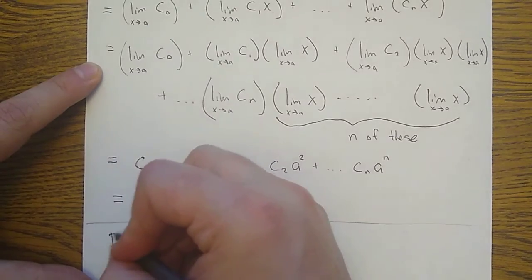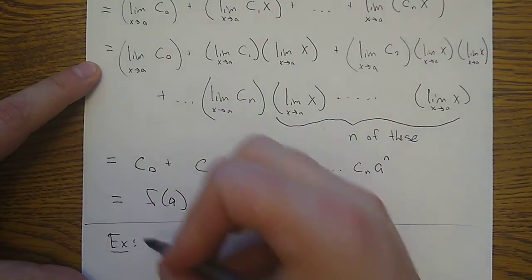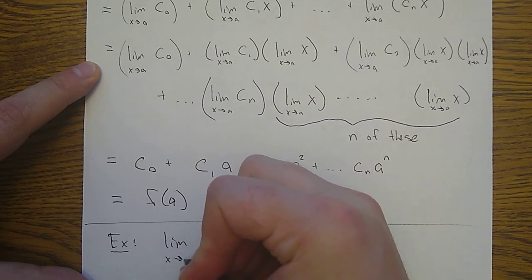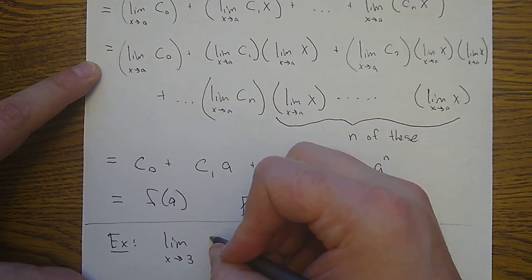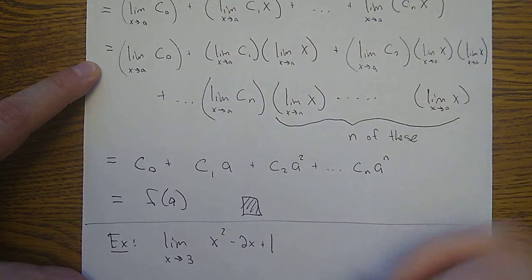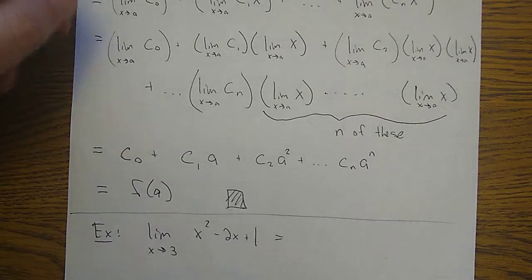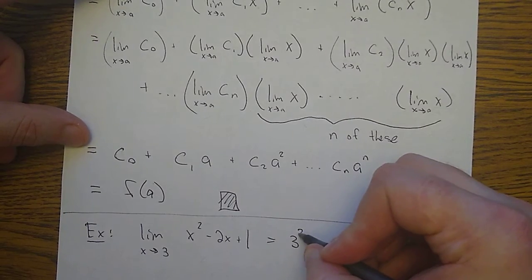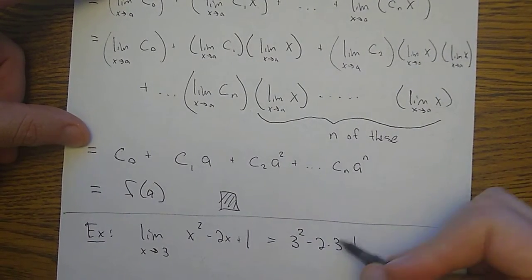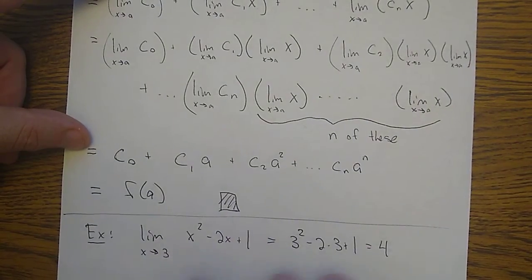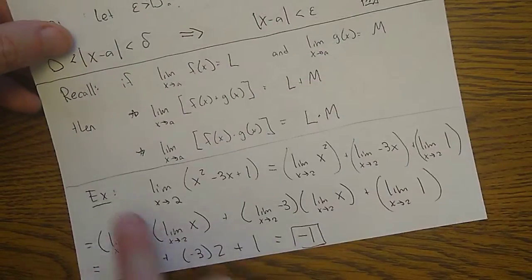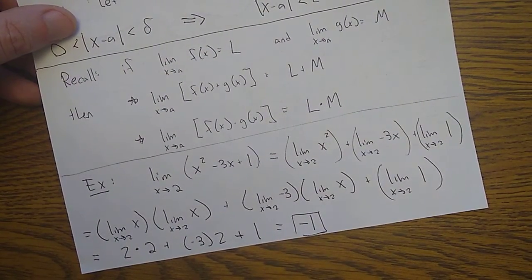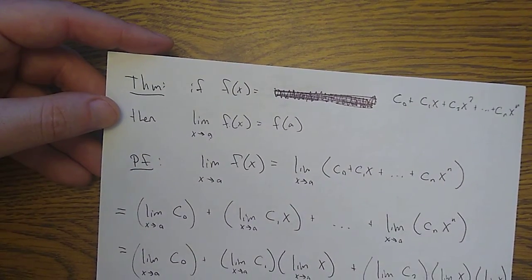Now that we have that general rule, I can do one like this much easier — I just plug it in. So nine minus six plus one is four. If we had that rule, we could have done that example a bit faster. Let me stop recording and upload this.